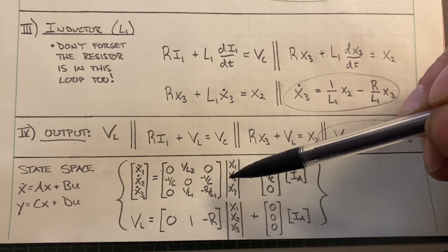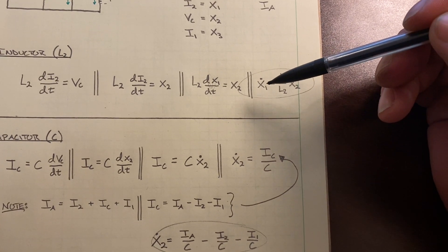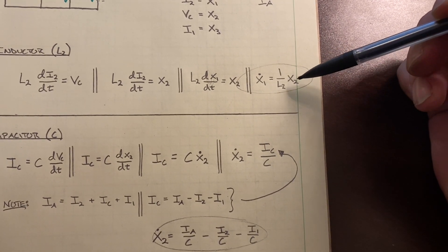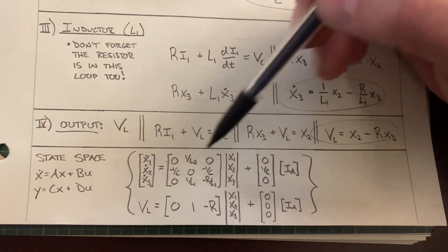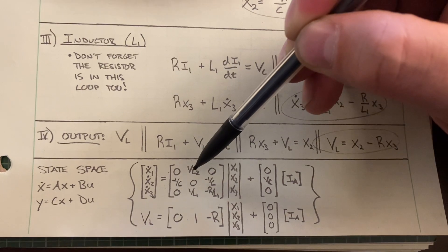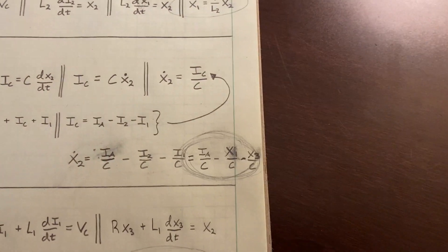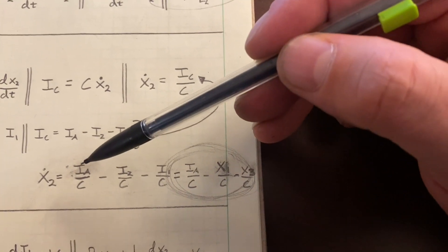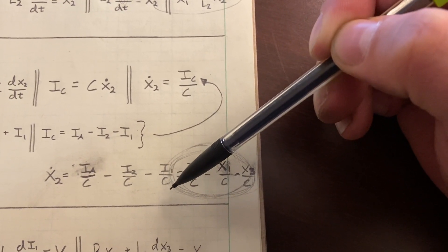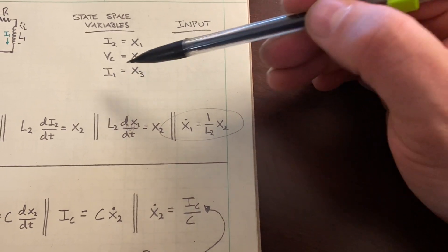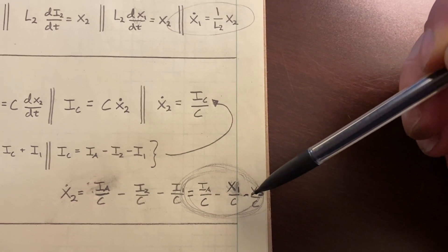To fill out the A matrix, let's check equation one, X1-dot. It has no X1 component, no X3 component, and a coefficient of 1/L2 on X2. So the first row is: 0, 1/L2, 0. For the X2-dot equation, realizing I left it as IA/C minus I2/C minus I1/C, and since I2 equals X1 and I1 equals X3, the final form is IA/C minus X1/C minus X3/C.